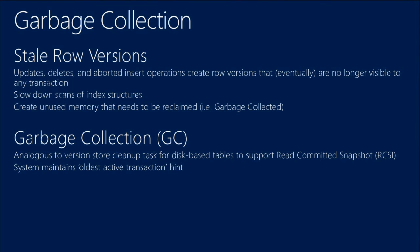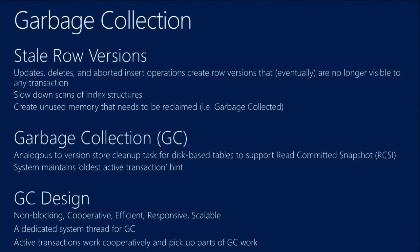We use a process of garbage collection — analogous to version store cleanup for read committed snapshots, except we don't do the cleanup in TempDB but in the table data structures themselves. To determine which rows can be deleted safely, we maintain an oldest active transaction hint — the timestamp of the oldest running transaction in the system. Any rows that are not valid as of this point in time can be removed and the memory freed up. Our GC system is designed for efficiency, responsiveness, and scalability.